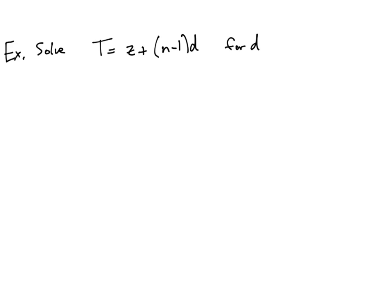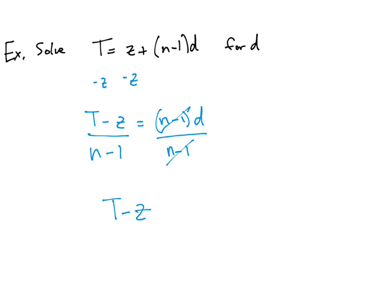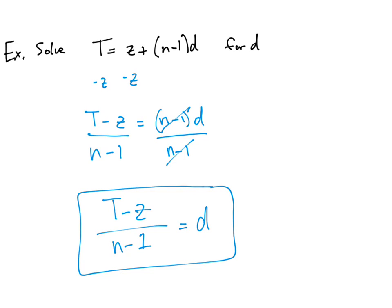In the next couple of examples we solve equations for specified variables. Here we have t equals z plus (n minus 1) times d, and we're solving for d. First, subtract z from both sides: t minus z equals (n minus 1) times d. We don't need to distribute — just divide both sides by (n minus 1), which cancels on the right, giving t minus z over (n minus 1) equals d.